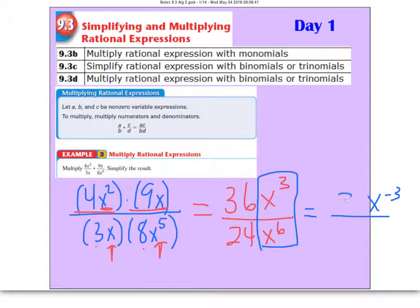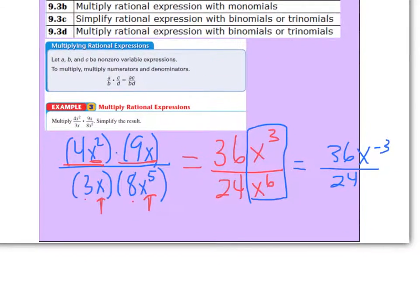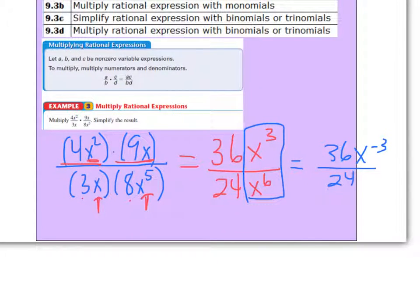And then we'd still have the 36 over 24. We cannot have negative exponents so what you would do now in this case is you would bring this down. So we'd have 36 and then 24 x to the 3rd.